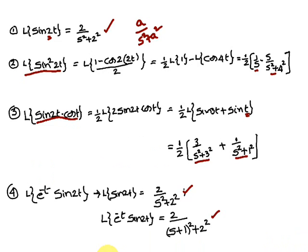The first problem is Laplace of sin(2t). The formula is a/(s² + a²). In place of a we have 2, therefore the answer is 2/(s² + 4). Next, Laplace of sin²(2t).